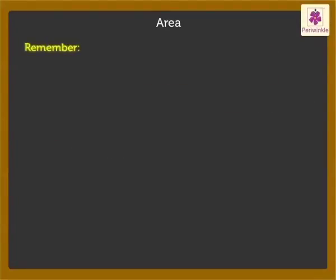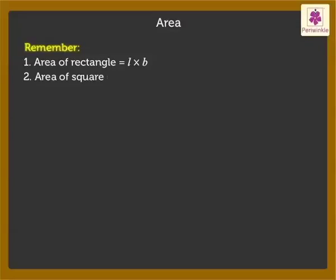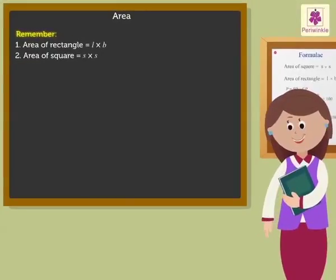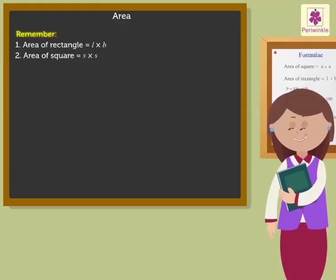Remember the formulas: 1) Area of a rectangle = length × breadth. 2) Area of a square = side × side. Kids, if you remember the formulas then finding the area will not be difficult.